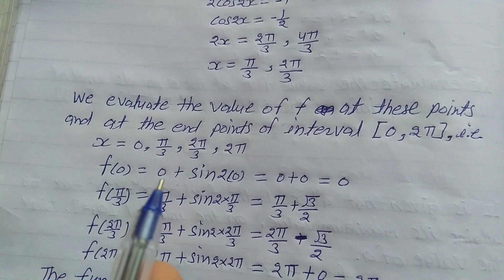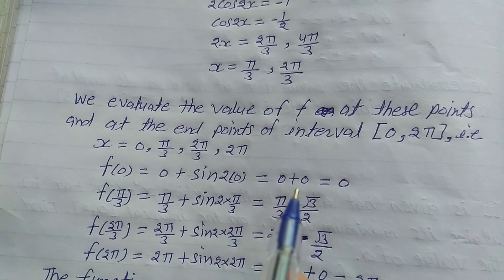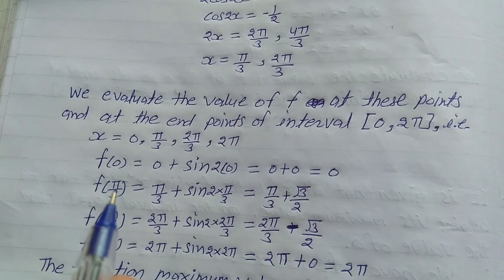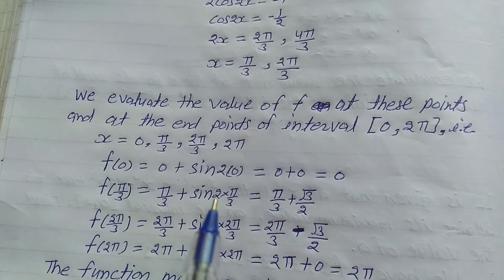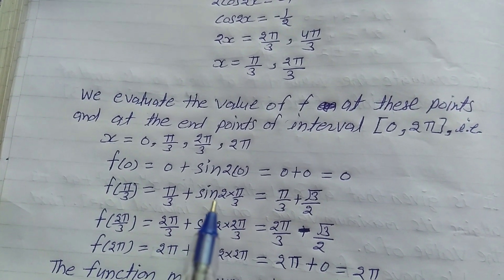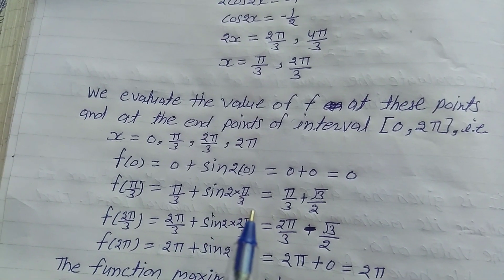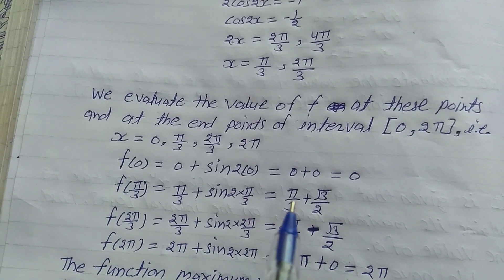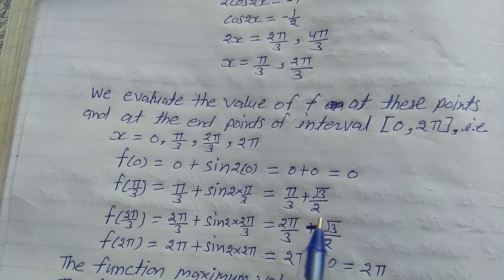f(0) = 0 + sin(2×0) = 0 + 0 = 0. f(π/3) = π/3 + sin(2×π/3) = π/3 + sin(2π/3). The value of sin(2π/3) is √3/2, so f(π/3) = π/3 + √3/2.